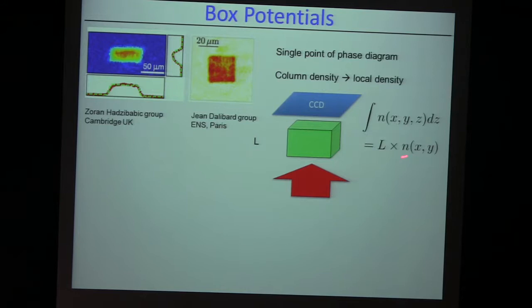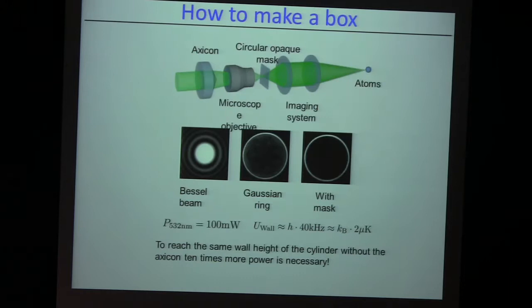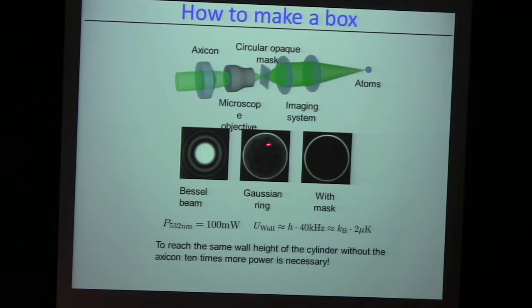So you simply get L — the length of the box, which you can measure — times the density of the gas in the xy plane, and immediately have access to the density itself and not some integrated density. We have optical ways to make this box potential. It turns out we like to use an axicon to give us these beautiful ring-shaped light profiles. You combine it with an opaque mask, so the mask together with this ring of light provides a very nice box for your atoms.